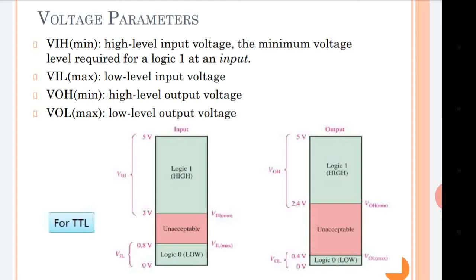There is also a range called the unacceptable range. If the value of the voltage falls within that range, it is not acceptable. If you observe the first graph, that graph is for the input and the second graph is for the output. In the first graph, there is a lower band called logic low and the upper band is logic high or logic 1.